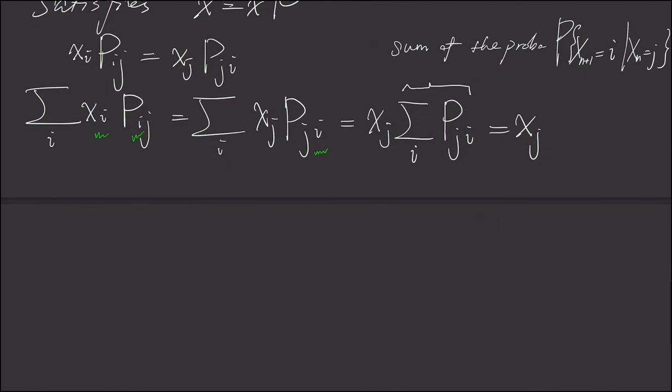As we can see that this is already the equation in theorem 4.1. This implies x equals x times P. Alright? It's because we have first term and this term.